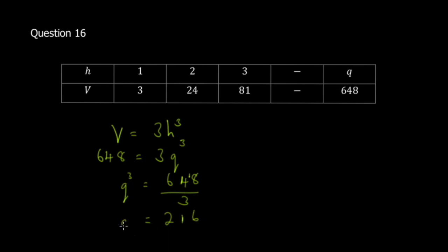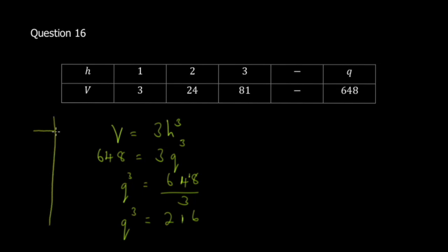So q cubed equals 216, meaning q is the cube root of 216. This is a non-calculator paper, so you need to find the cube root of 216 without a calculator. What you do is use a factor tree — a T-diagram — real quick.